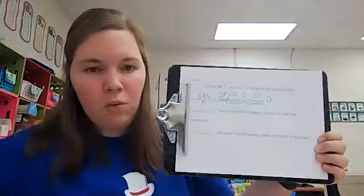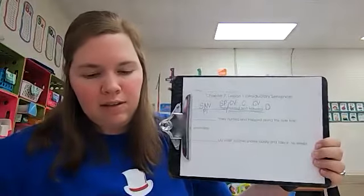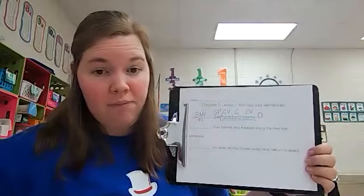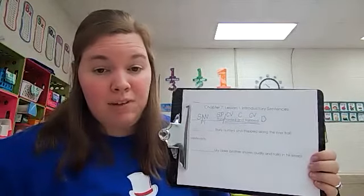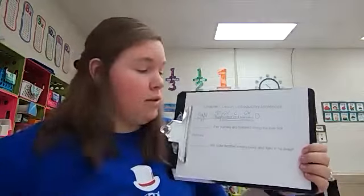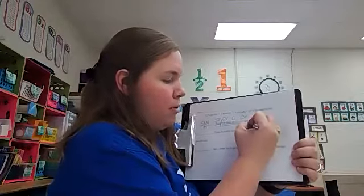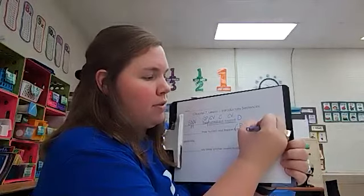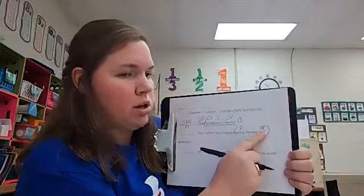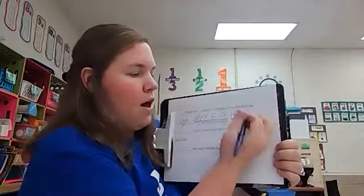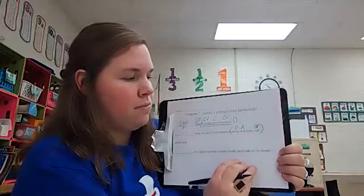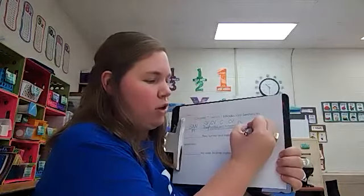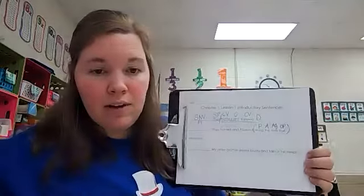We're going to add a few more words in sentence number two. This sentence says: They hunted and trapped along the river trail yesterday. Do you see any prepositions? There is one: along. Preposition. Along what? Trail. Object of the preposition. There's your POP, preposition, object of the preposition. The is an article adjective. And river is describing the trail. It's describing a noun, so it is an adjective.